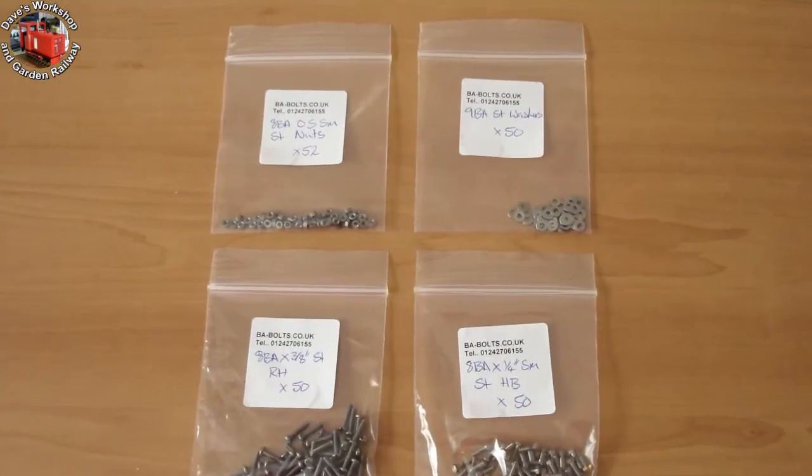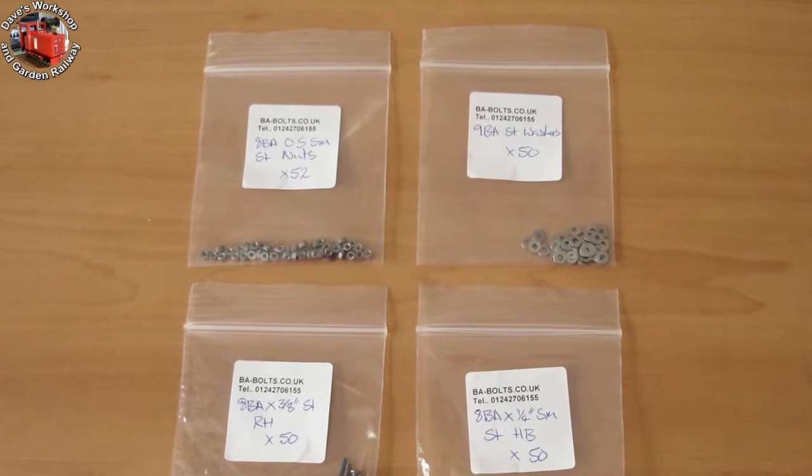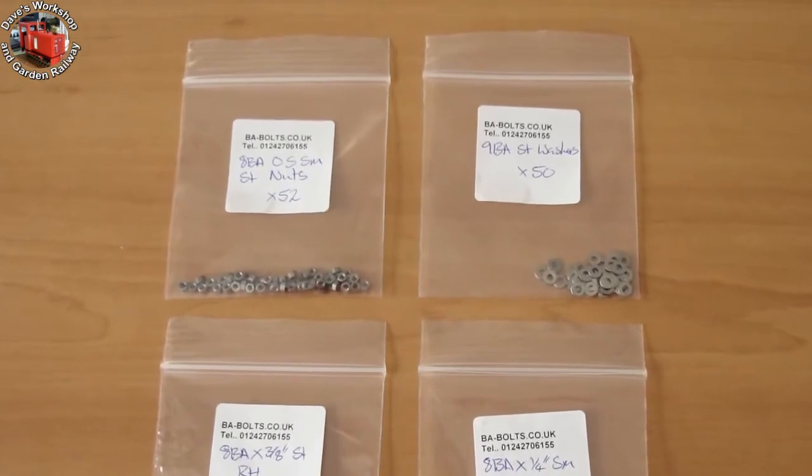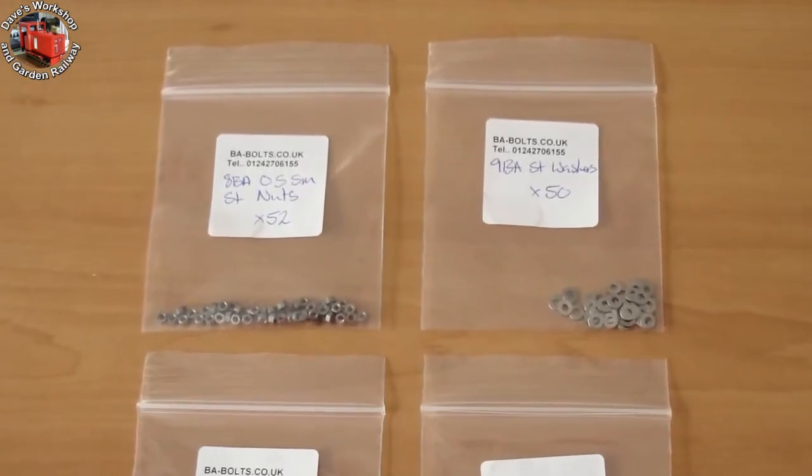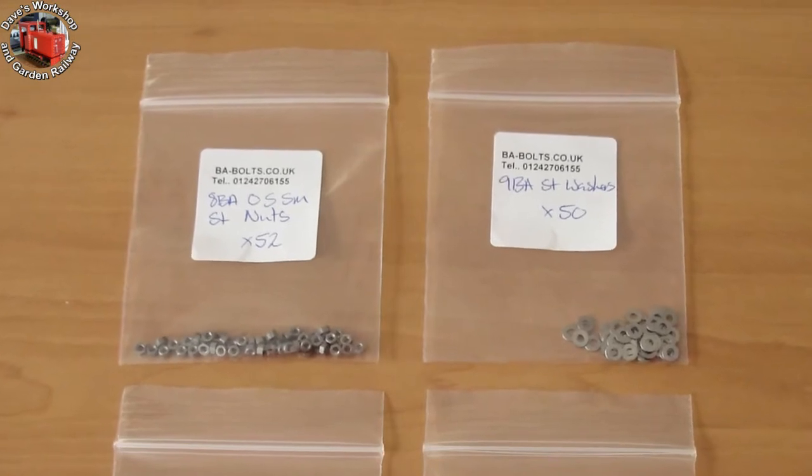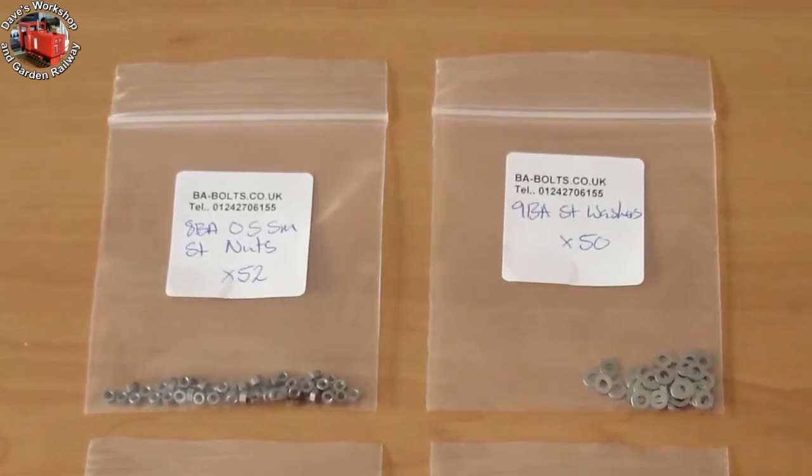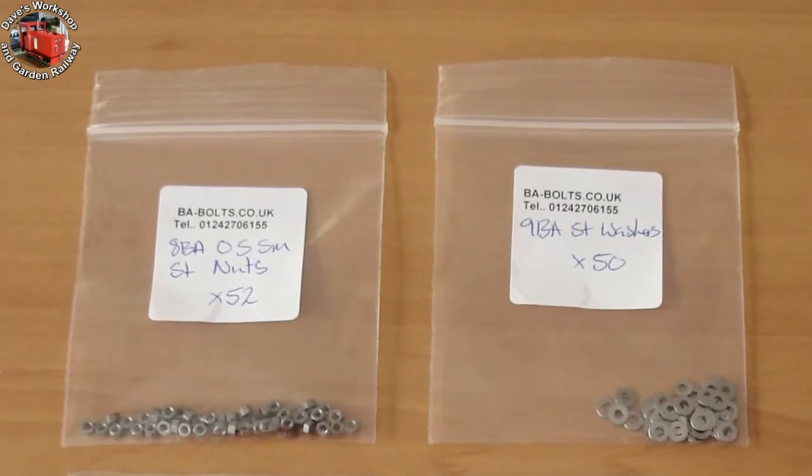My order arrived. 8 BA nuts, one size smaller, washers, hex head screws, one size smaller, and cheese head screws. The hex heads were too small, so I had to make a box spanner.